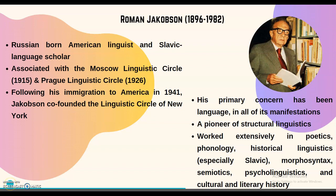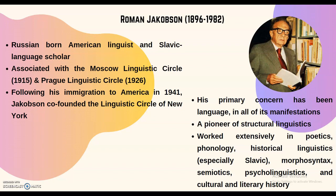Let's get started. Roman Jakobson was a Russian-born American linguist and Slavic language scholar. Being a pioneer of Russian Formalism, he was associated with the Moscow Linguistic Circle, founded in 1915, and co-founded the Prague Linguistic Circle in 1926. Following his immigration to America in 1941, Jakobson co-founded the Linguistic Circle of New York. His primary concern has always been language in all of its manifestations. He was a pioneer of structural linguistics and worked extensively in poetics, phonology, historical linguistics, morphosyntax, semiotics, psycholinguistics, and cultural and literary history.